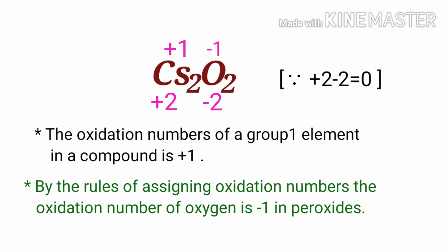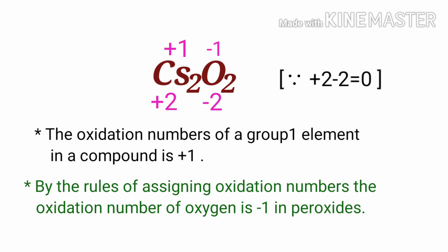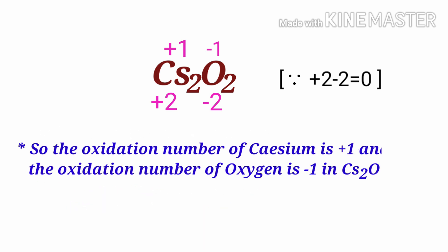Therefore, the sum of the oxidation number of atoms in cesium peroxide is 0. So the oxidation number of cesium is plus 1, and the oxidation number of oxygen is minus 1 in cesium peroxide.